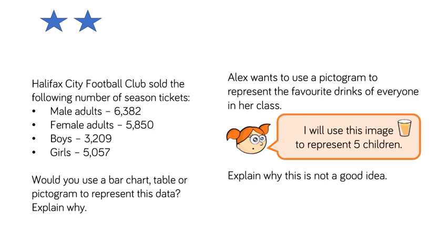Halifax City Football Club sold the following number of season tickets: male adults 6,382; female adults 5,850; boys 3,209; girls 5,057. Would you use a bar chart, table or pictogram to represent this data? Look closely at the numbers of season tickets for the different people. After making your choice of how the data could be represented, explain why.